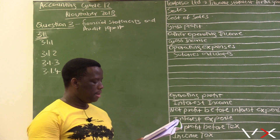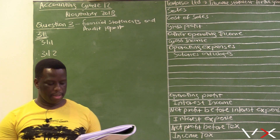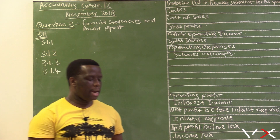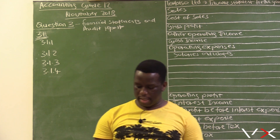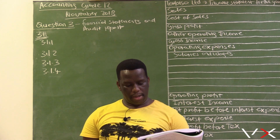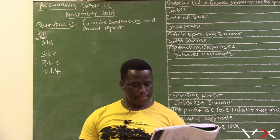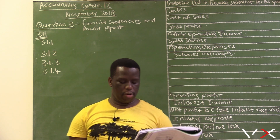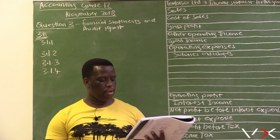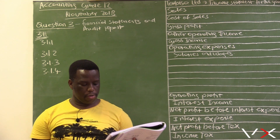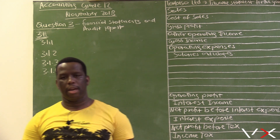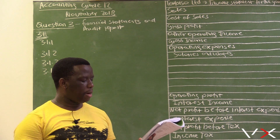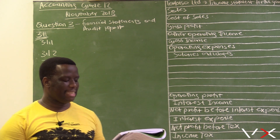The options given are: non-current assets — these are assets that last a long period of time in the business, not easily convertible into cash, lasting more than 12 months. Current assets have a shorter lifespan and are easily convertible into cash. We also have equity, operating expenses, and operating income as options to choose from.